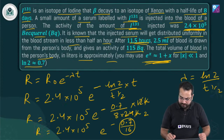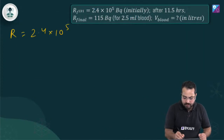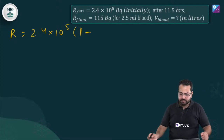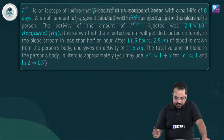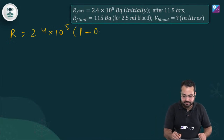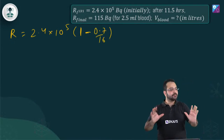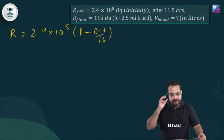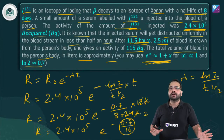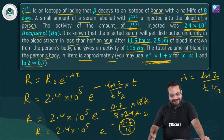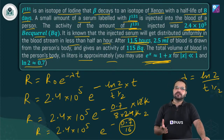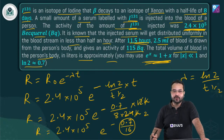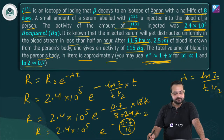So the activity after 12 hours becomes 2.4 × 10⁵ × (15.3/16). Now in the body, say there are V liters of blood. The activity we calculated is coming from the entire blood, since the serum distributed uniformly. But 2.5 ml of blood is taken and that shows 115 Becquerel of activity.